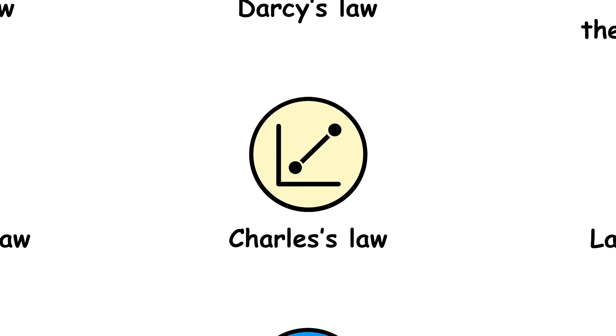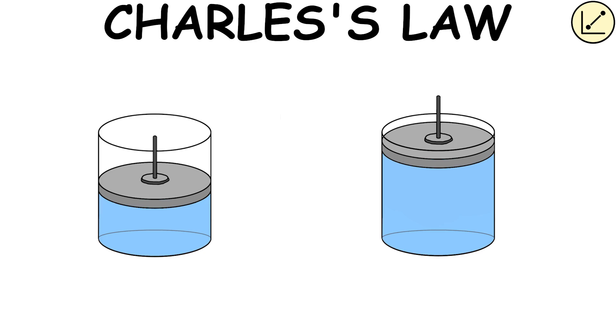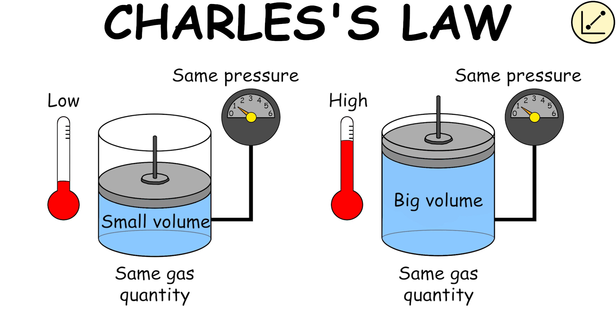Charles' Law, also known as the Law of Volume, states that the volume of a gas is directly proportional to its absolute temperature, provided that the pressure and quantity of gas are kept constant.